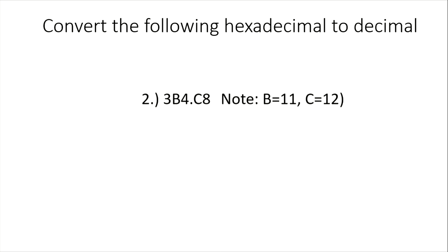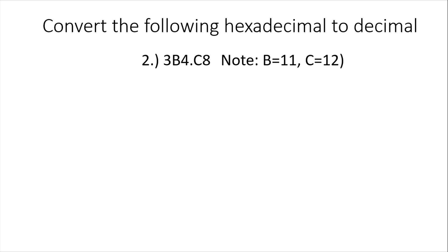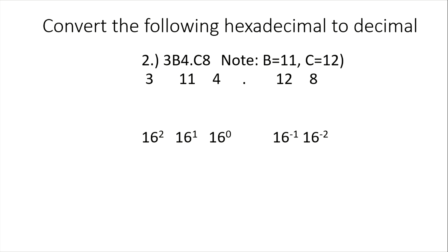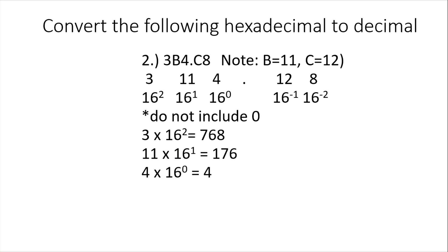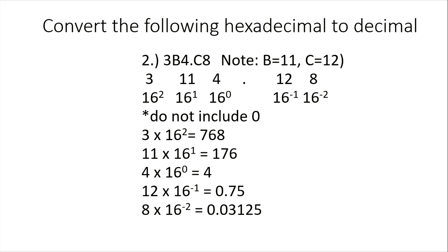For the last example with a decimal point, we first convert the letters: B is 11, C is 12. At the one's digit, we have 16 raised to 0, then 16 raised to 1, 16 squared to the left, and negative exponents to the right of the decimal point. We multiply each digit by its corresponding base and exponent, then add. The result is 948.78125 base 10.